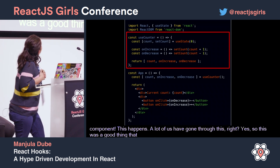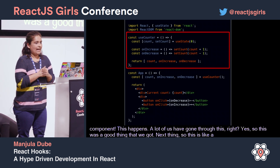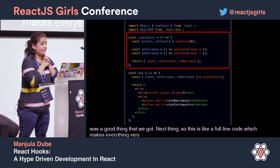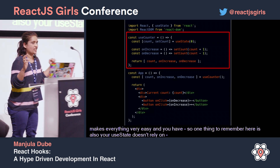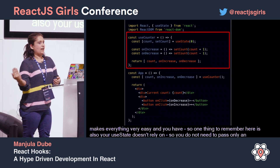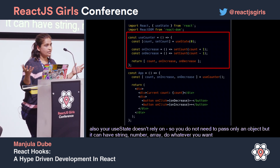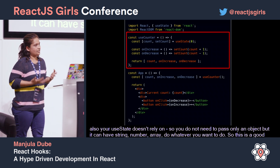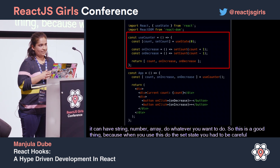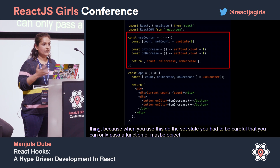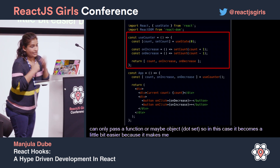One thing to remember is that useState doesn't require you to pass only an object — it can have a string, number, array, whatever you want. This is a good thing because while using this.setState you had to be careful that you can only pass a function or maybe an object. So in this case it becomes a little bit easier and makes you more flexible as a developer.